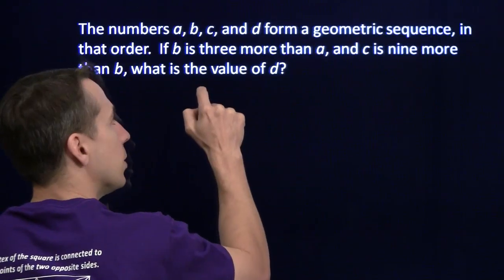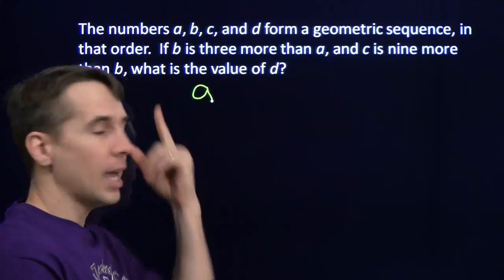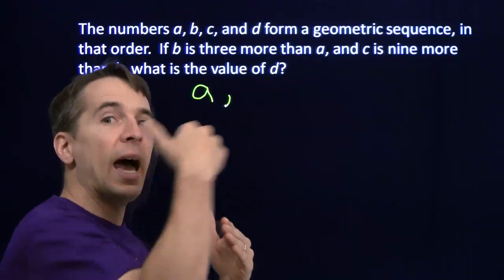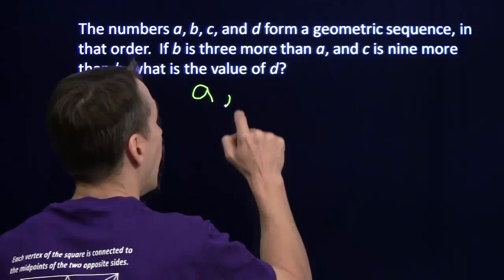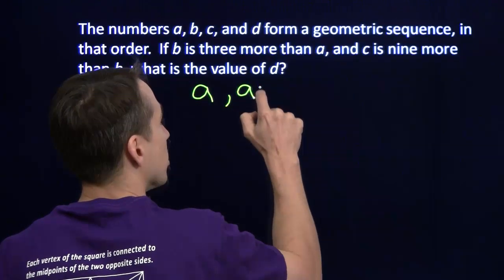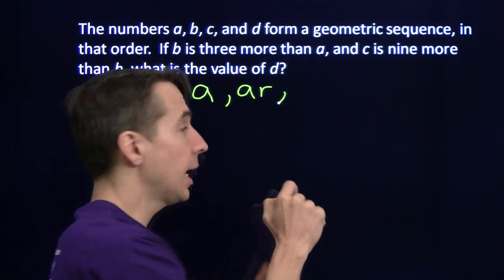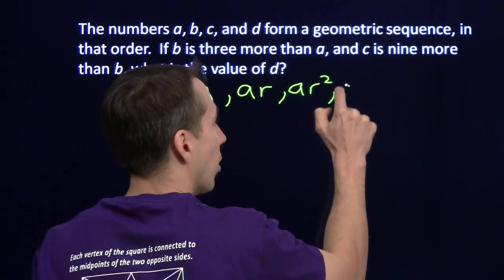Now in a geometric sequence, again, we start off at the first term. Again, we're going to call it A. Conveniently, that's A in the problem as well. And then here, instead of adding by the same thing at each step, we're going to multiply by the same thing. I usually use R for common ratio. So the next term is A times R. For the next term, we multiply by R again. We get AR squared, and then AR cubed.